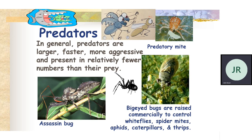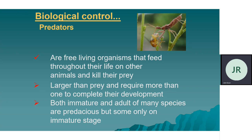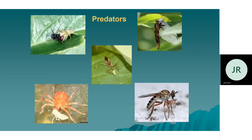Other predators: in general, predators are larger, faster, more aggressive, and present in relatively fewer numbers than their prey. There are assassin bugs and many bugs. Big-eyed bugs are also raised commercially — raised in number, we study their whole life cycle, and then they can be introduced into a newer place as a biological control agent. Predators can kill large numbers of prey. They are generalists rather than specialists — not specialized in selecting food. They are social creatures, such as wasps and ants.